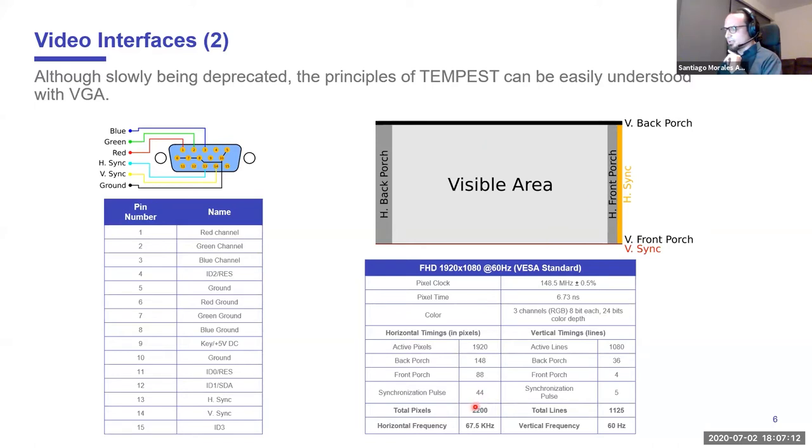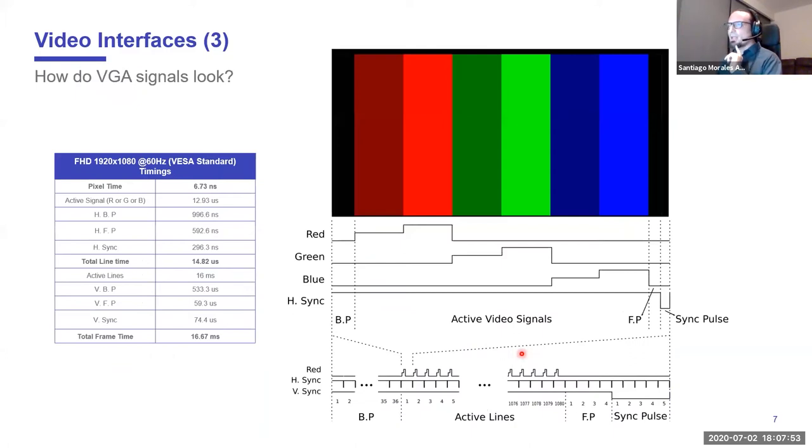But in reality, we are seeing only a portion of the screen because the total quantity of data being transmitted is 2200 pixels in width and 1125 lines in height. Why is this happening? Because the display monitor needs these blank spaces to synchronize its internal clocks. We have the horizontal back porch, front porch, and synchronization pulse, and the vertical back porch, front porch, and synchronization pulse.